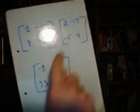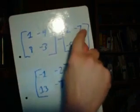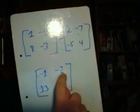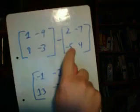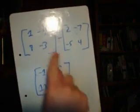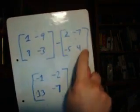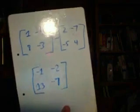Well, 1 plus negative 2 is negative 1. Negative 9 plus 7 is negative 2. 8 plus 5 is 13. And negative 3 plus negative 4 is negative 7.